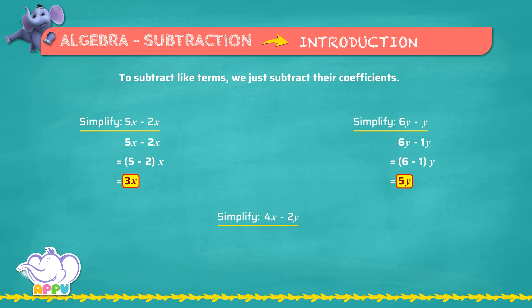This expression cannot be simplified because x and y are two different variables, or 4x and 2y are unlike terms. This remains the same: 4x minus 2y.